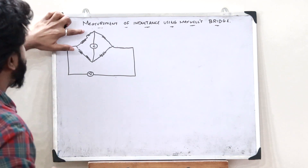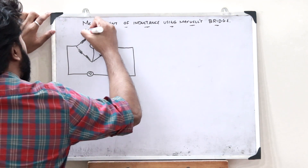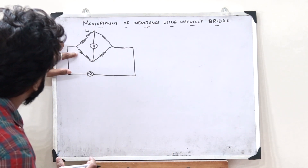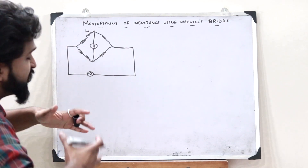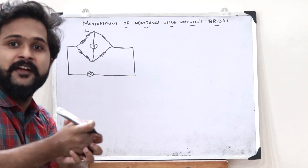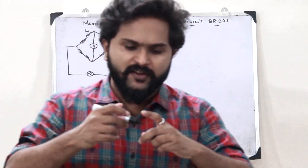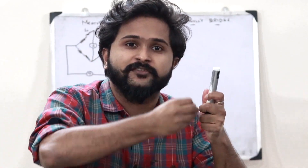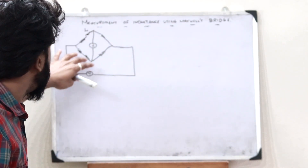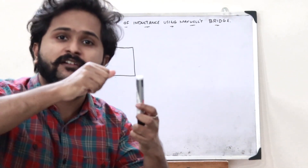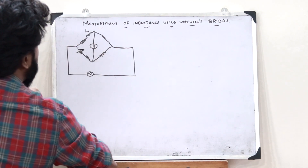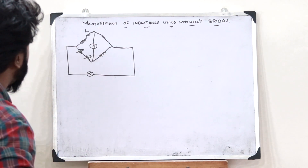Here, if L1 is the value of inductance we have to find, then the corresponding resistor and inductor arm is replaced by a variable resistor and a variable inductor. A variable resistor is one whose resistance value can be changed, and similarly the variable inductor's value can also be changed to whatever desirable value we need.